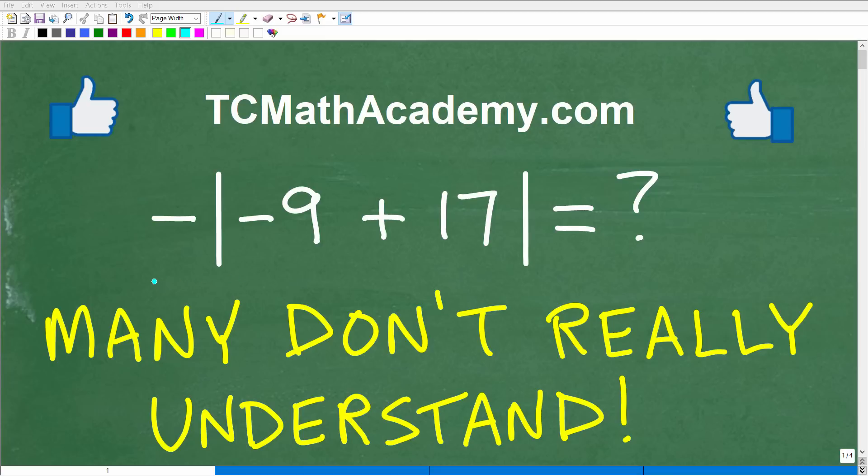Okay, so a lot of people could figure out this basic math problem. Matter of fact, let's go ahead and take a look at the problem. We have negative of absolute value of negative 9 plus 17, and of course we want to see what this is equal to.